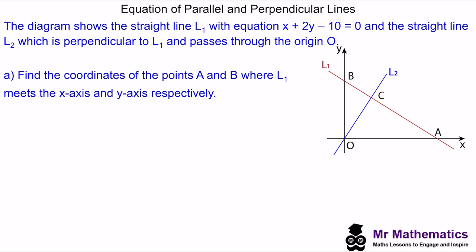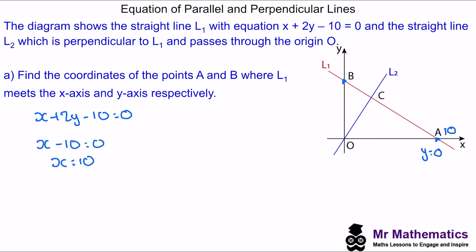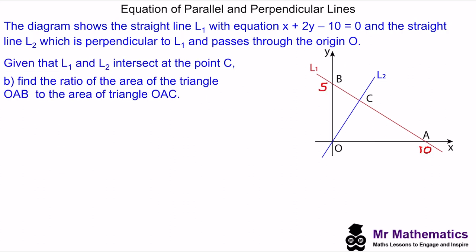We'll begin by working out the coordinates of A and B. We've been given x plus 2y minus 10 equals 0. At A, we know y equals 0, so substituting gives x minus 10 equals 0, so x equals 10. At B, we know x equals 0, so 0 plus 2y minus 10 equals 0, so y equals 5. From this information we can work out the area of triangle OAB, which is half a base of 10 multiplied by the height of 5, giving 25.